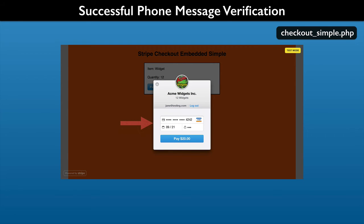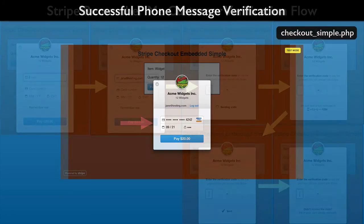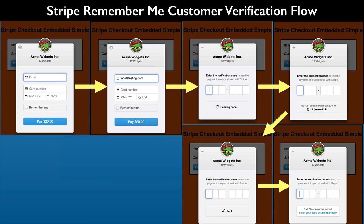If the security code is valid, the payment data is again pre-filled. Now you can just cancel out of this checkout form. This gives you the flow for a returning Remember Me Stripe customer. Keep in mind that this has nothing to do with any separate login that you have for your customers.